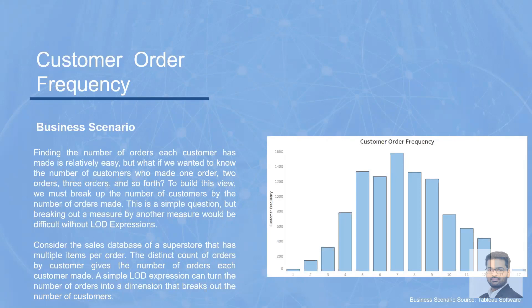Basically, I want to create a distribution that helps me understand how many customers are purchasing N number of orders. For example, in this chart you can see one order, two orders, three orders, and so on. I can see that customers with seven orders have the highest frequency — meaning the majority of my customers are purchasing seven orders. This is what we want to create in Tableau using the Sample Superstore data.